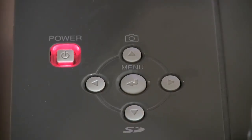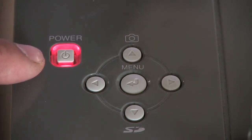To power on the document camera, you simply press the power button, which is indicated by a red LED light.